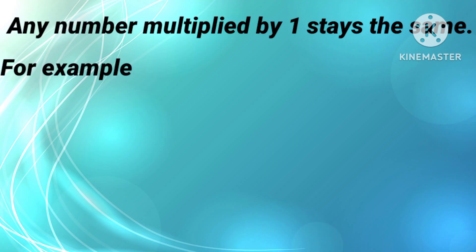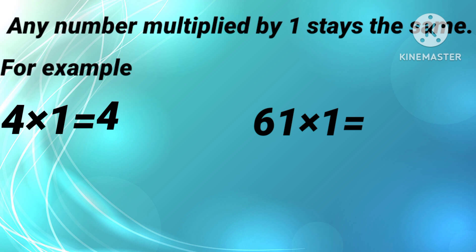Any number multiplied by 1 stays the same. For example, 4 multiply by 1, the answer is 4. 61 multiply by 1, the answer is 61. 679 multiply by 1, the answer is 679.